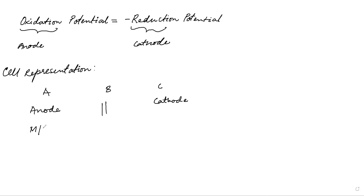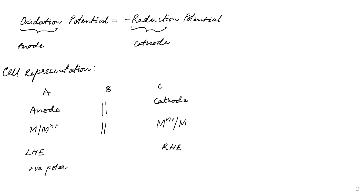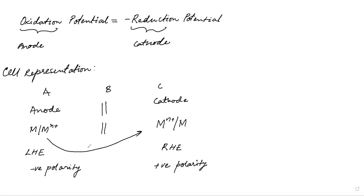The reaction at anode: M gets oxidized to Mⁿ⁺. At cathode: Mⁿ⁺ gets reduced to M. The left-hand electrode is the anode and the right-hand electrode is the cathode. The anode is of negative polarity and the cathode is of positive polarity, because electrons move from anode to cathode — electrons being negatively charged move toward the positive end.